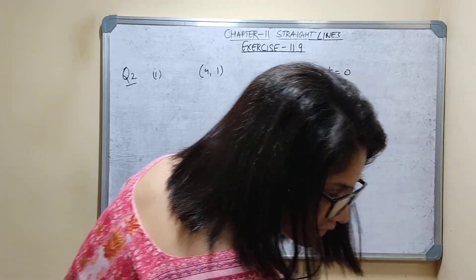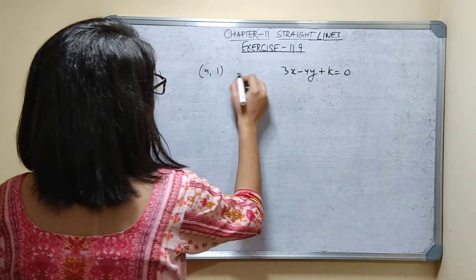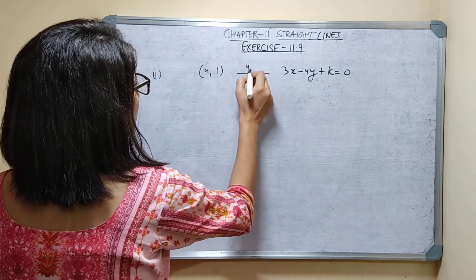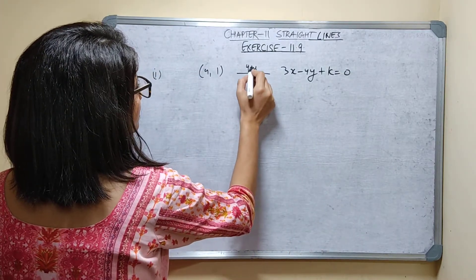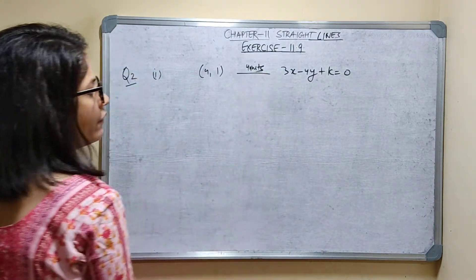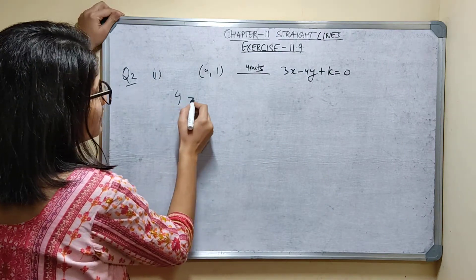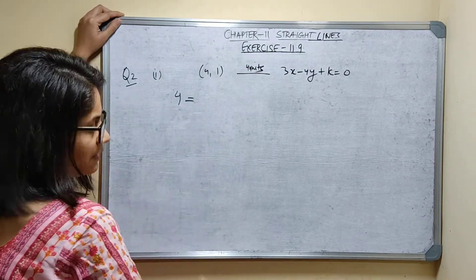The distance is given as 4 units. So the perpendicular distance is 4 units.